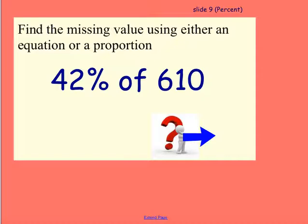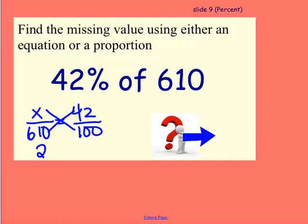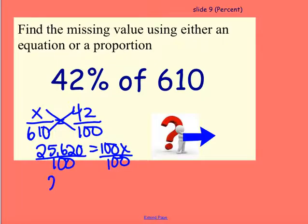It says 42% of 610. Well, if we're using the is over of, the of is right there, 610. But I don't know what is the part of 610. I know my percent is 42 out of 100. So I can go ahead and cross multiply here. And so we're going to multiply 610 times 42, and it gives me 25,620 is equal to 100x. So to solve this, I'm going to divide by 100. And when I do that, I am going to get 256.2 equaling x. That is 42% of 610.